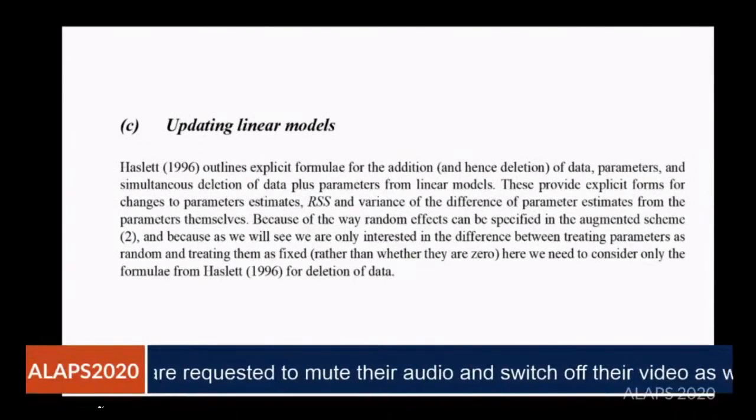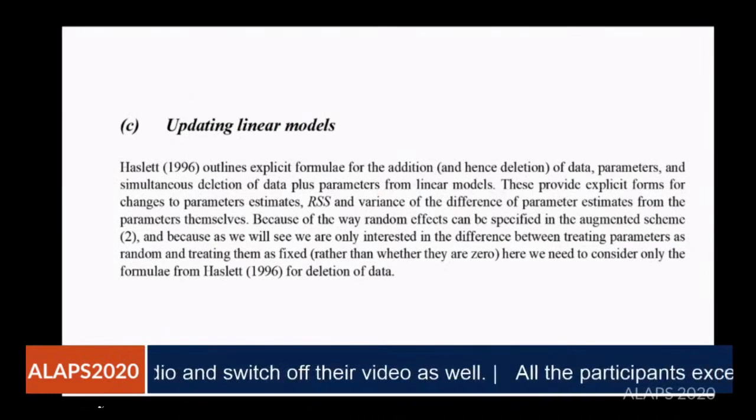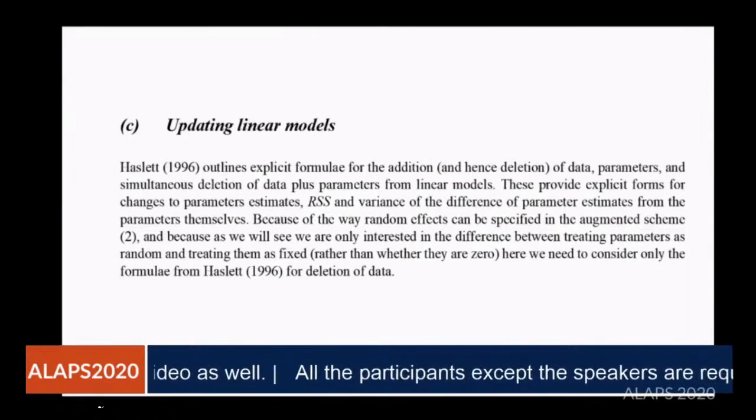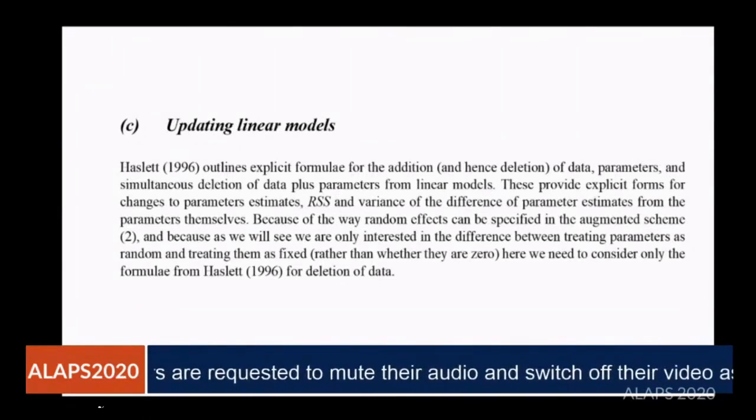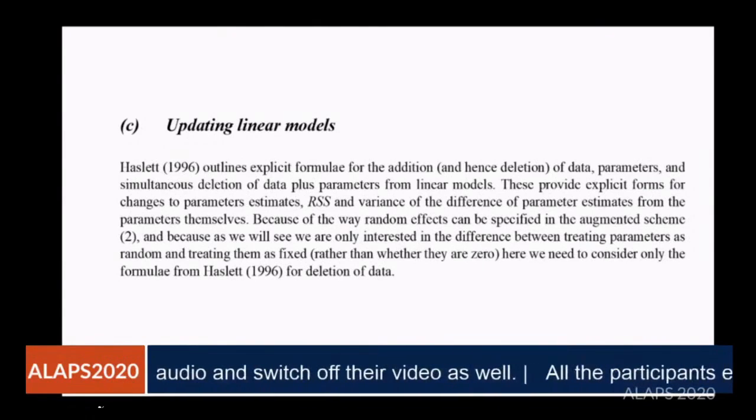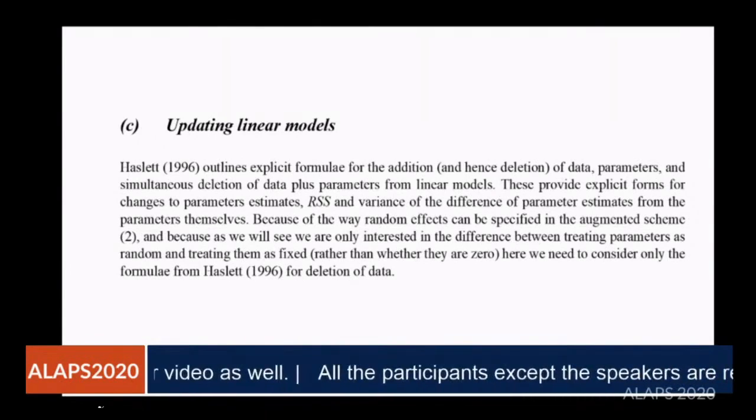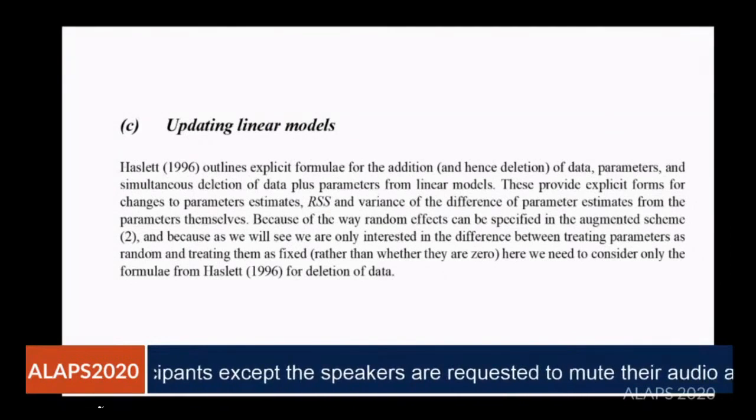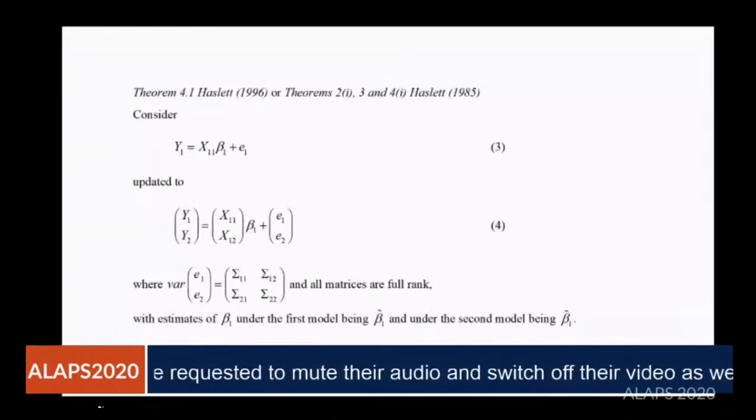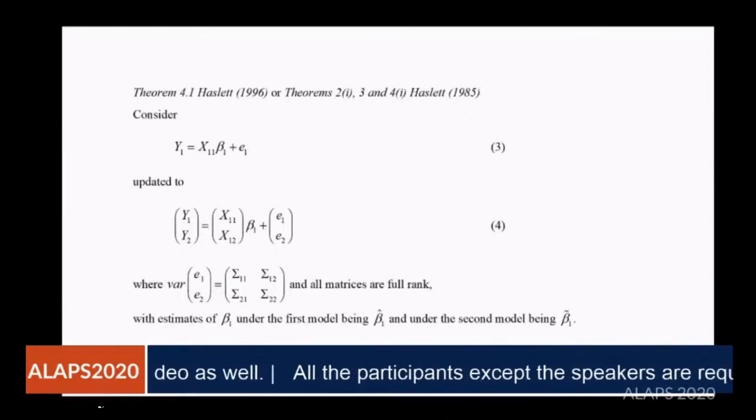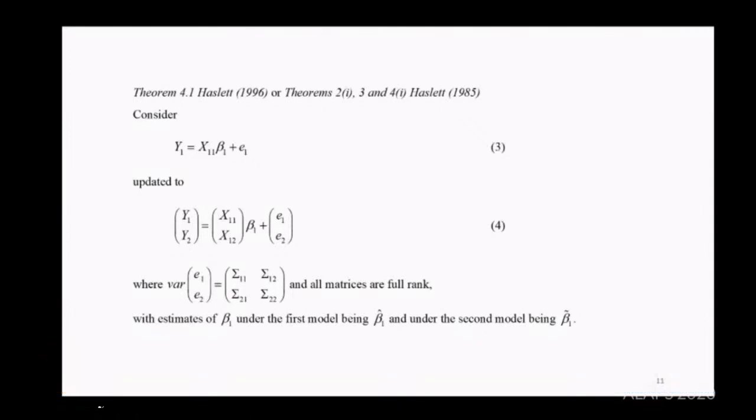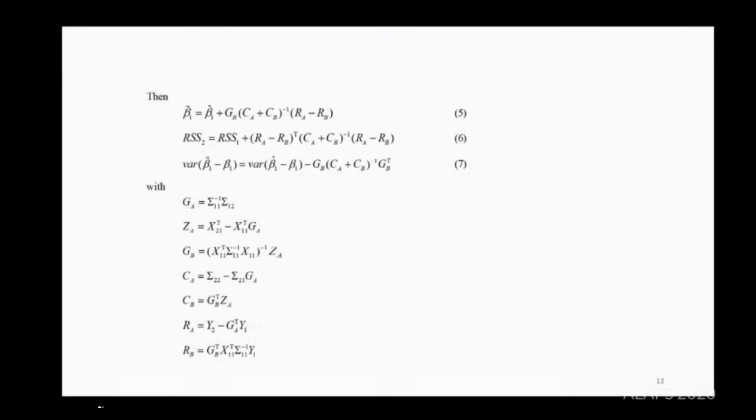Updating linear models. In a 1996 paper in Linear Algebra and Its Applications, I outlined explicit formulas for addition and deletion of data parameters and simultaneous deletion of data and parameters from linear models. These give changes to parameter estimates, residual sums of squares, and variance of the difference. We're interested in the difference between treating parameters as random versus fixed rather than whether they're zero. The formula we're interested in is for deletion of data. We start with the first model and update it by adding extra data, regressors, and error term. What's the relationship between estimates of beta one in the two models?